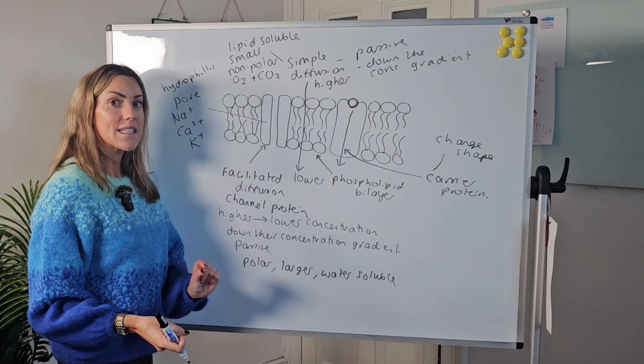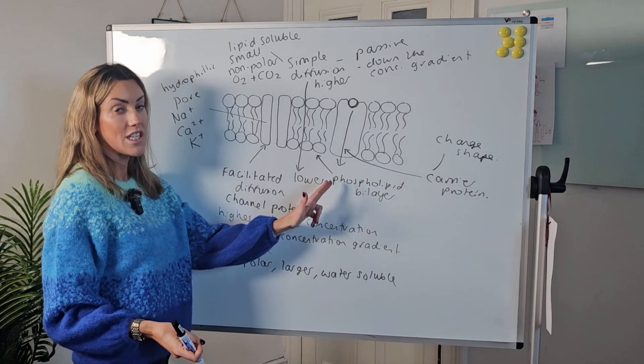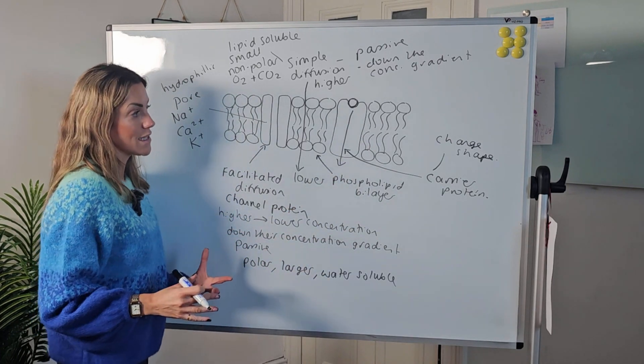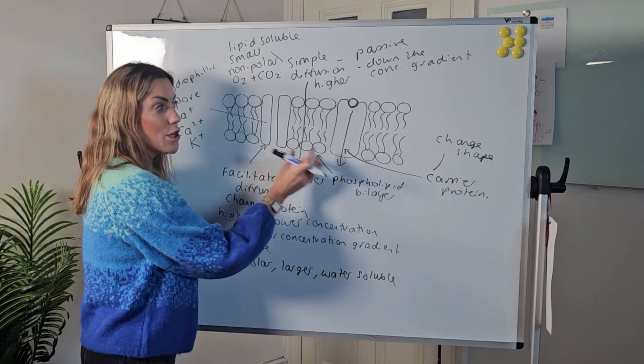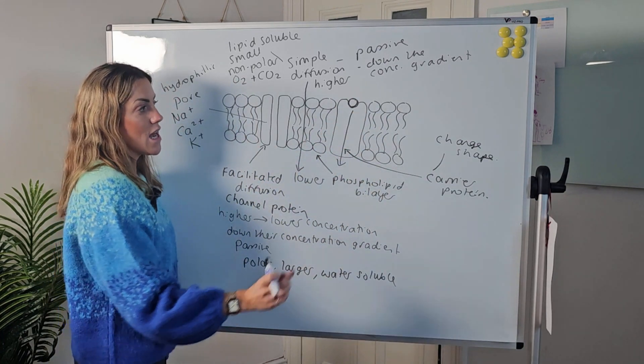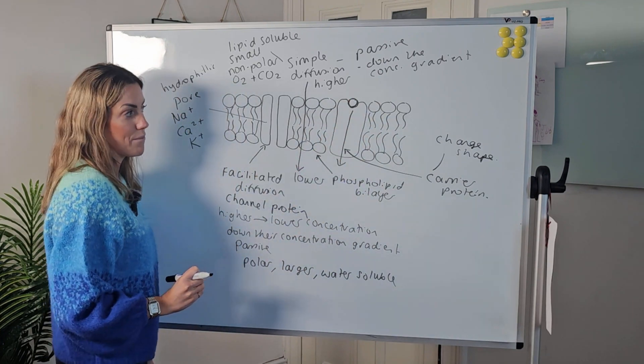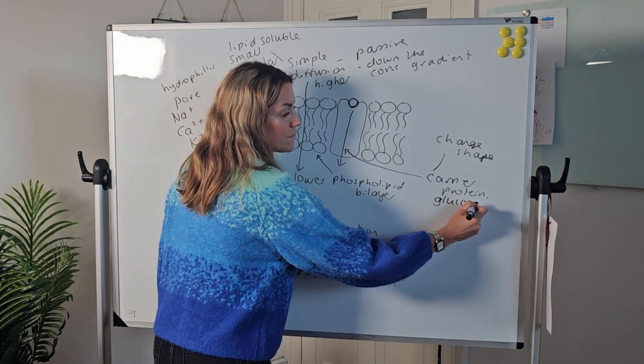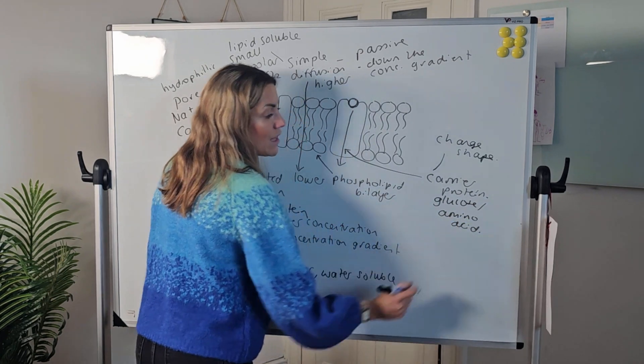Because this is facilitated diffusion and that substance is moving down the concentration gradient, it doesn't require energy. Don't confuse it with active transport, which is against the concentration gradient. So we do have a shape change, but it doesn't require energy. This, for example, might be something like glucose or an amino acid.